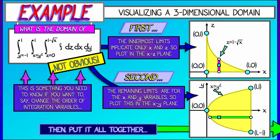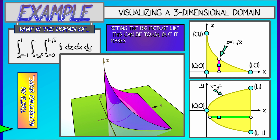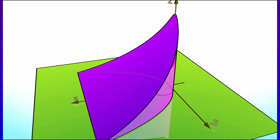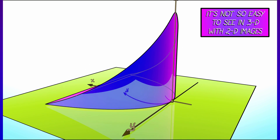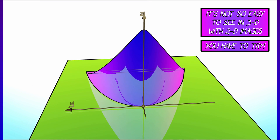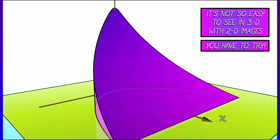Now here's the hard part. You have to take those two planar projections and merge them together to extract the full three-dimensional shape. It's a bit of a challenge and it really takes some practice. I admit it's not easy — I cannot just look at a triple integral, see the limits, and just boom, see the shape in my head. I really have to work with planar projections and be careful with the limits of integration, making sure I'm always going from lower to upper.